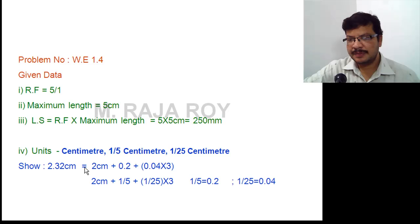Now, 2.32 is equal to 2 cm plus 0.2 plus 0.04. 1/25 is 0.04, and 1/5 is 0.2. So, 0.04 into 3. That means, in the 1/25 scale, go to the third division. That means, 3/25.